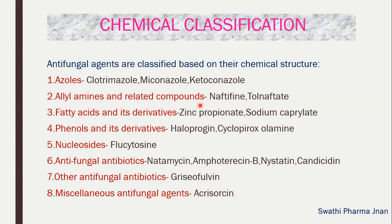The second class is allylamines and related compounds — examples are naftifine and tolnaftate. These drugs contain allylamine as the side chain. Next is fatty acids and derivatives — examples are zinc propionate and sodium caprylate. Phenols and derivatives — examples are haloprogin and ciclopirox olamine, where phenol is the basic nucleus. Next is nucleosides — flucytosine is the drug under this class and it contains pyrimidine as the basic nucleus.